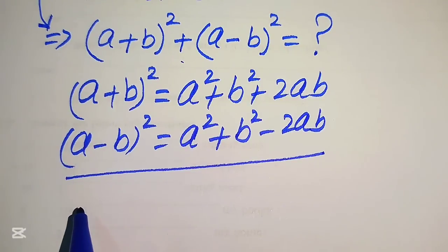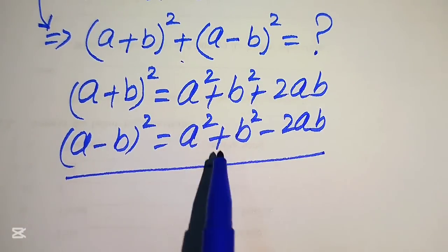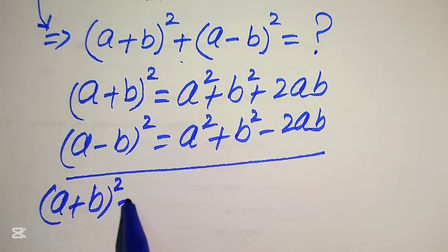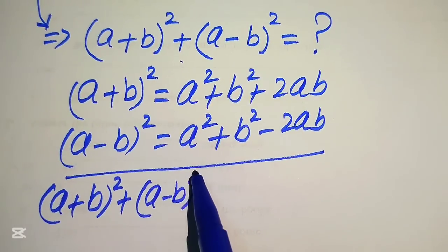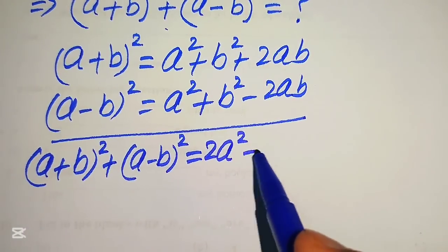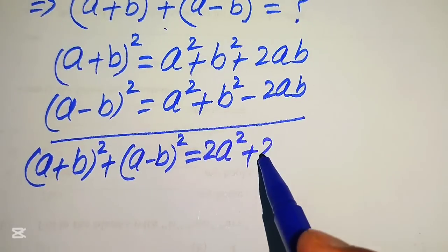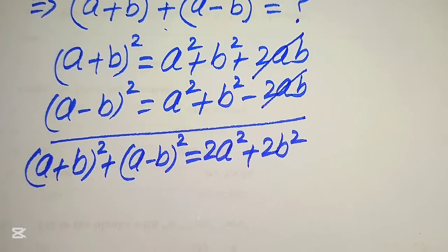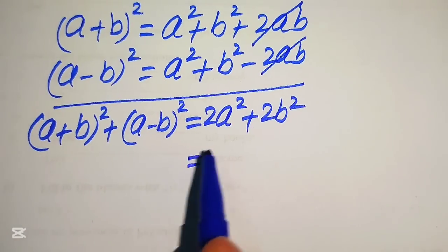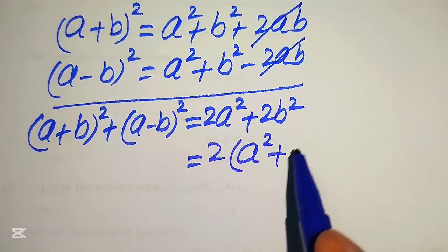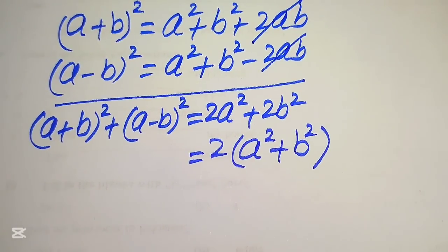When we add these two formulas — left-hand side with left-hand side and right-hand side with right-hand side — we get (a+b)² + (a−b)² equals 2a² + 2b², since the +2ab and −2ab cancel each other out. This gives us the nice formula: 2(a² + b²).